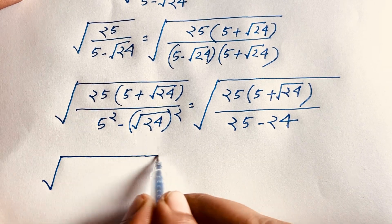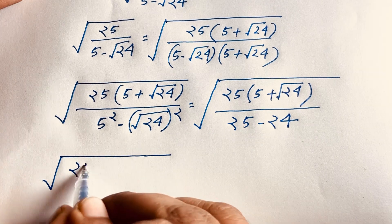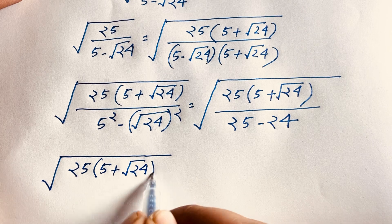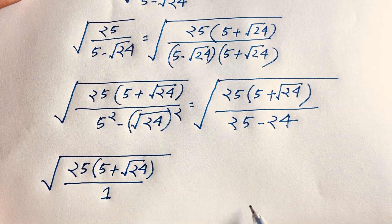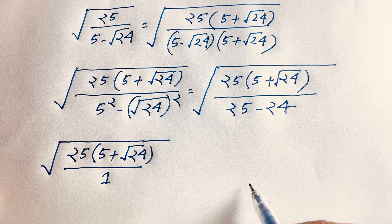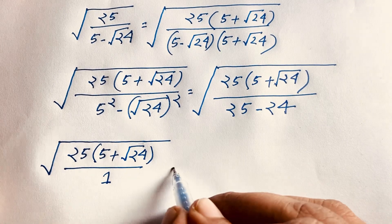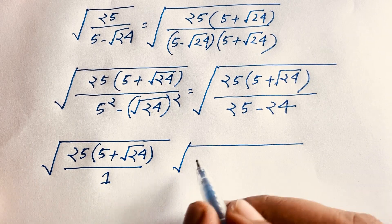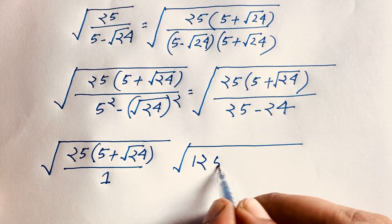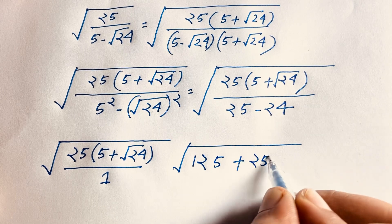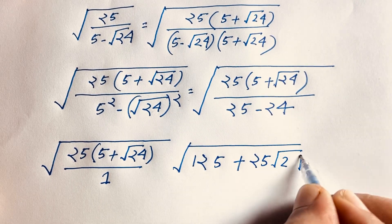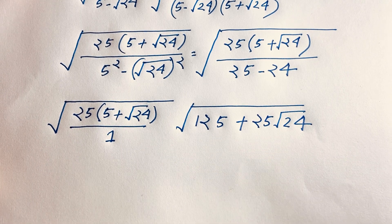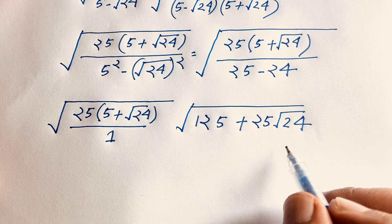Now our expression becomes: square root of [25 times (5 plus square root 24)] over 1. This radical math expression simplifies to square root of (25 times 5 plus 25 times square root 24), which equals square root of (125 plus 25 square root 24).